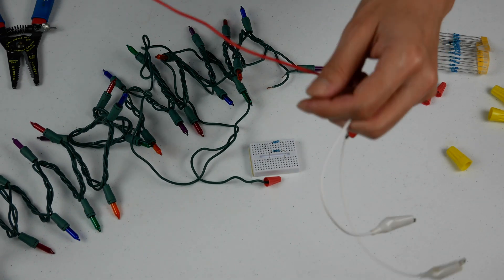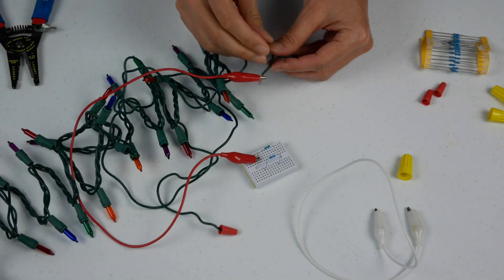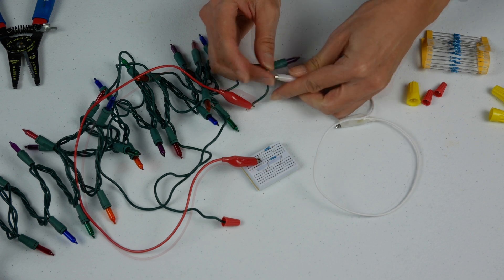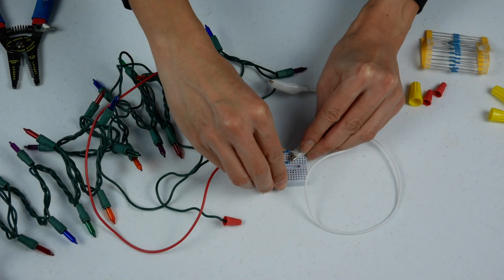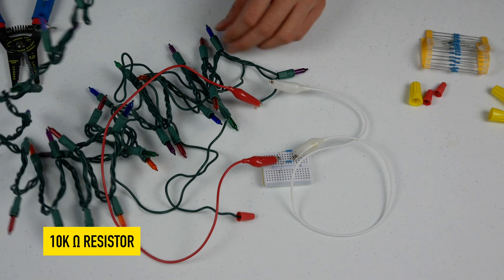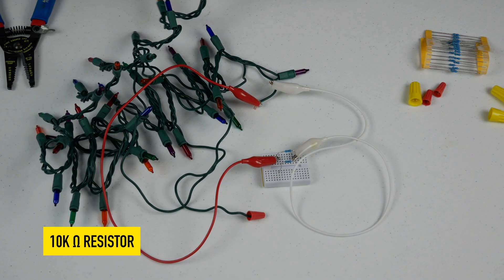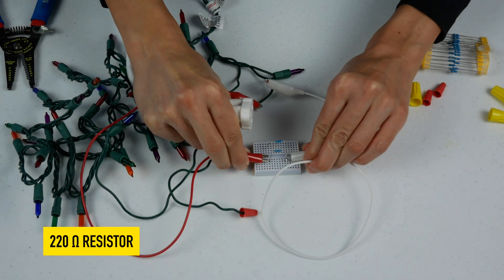Get out my little clips here, connect this to one of my resistors, other wire, another resistor, and connect this to the resistor. Now everything's unplugged. Now I'm ready to plug it in. Okay, nothing. Okay, let's try the other resistor.